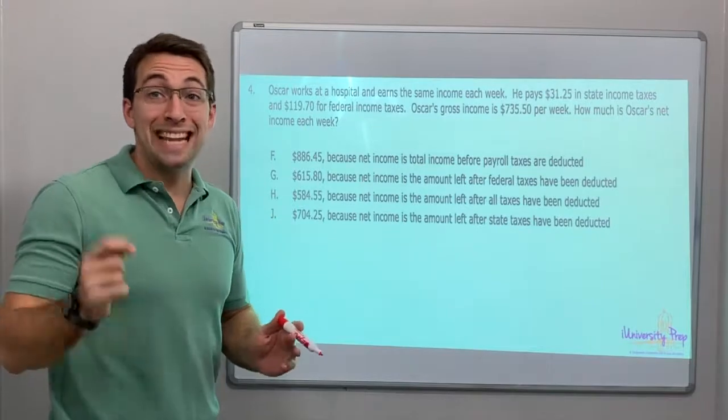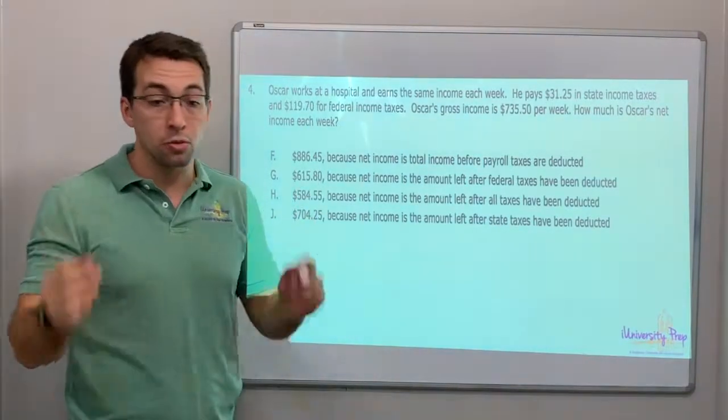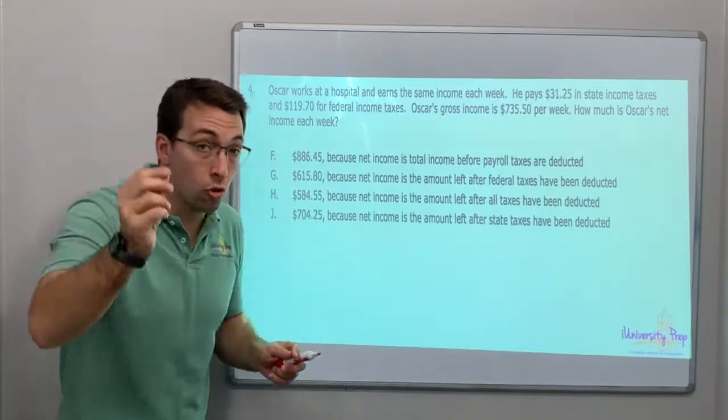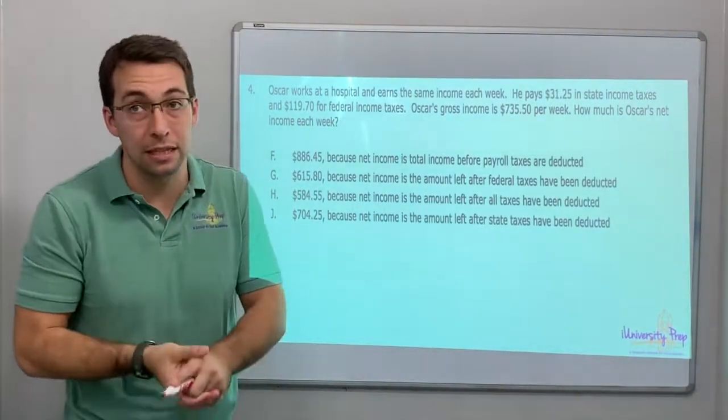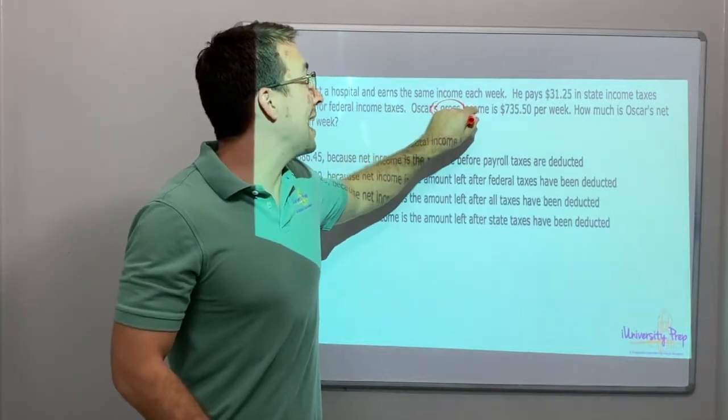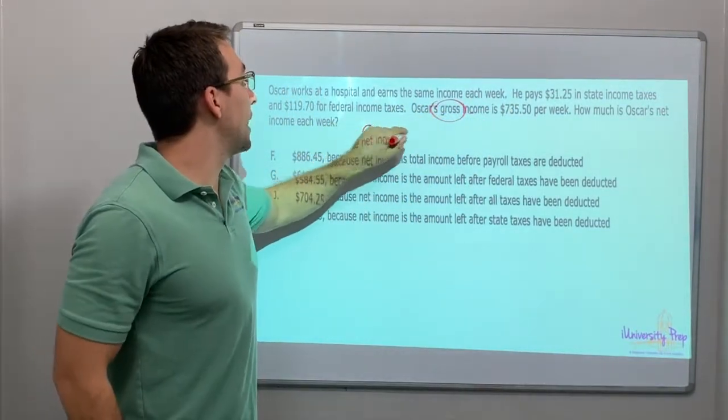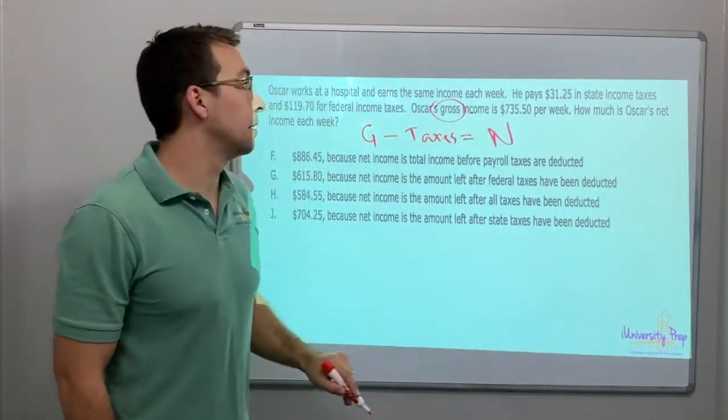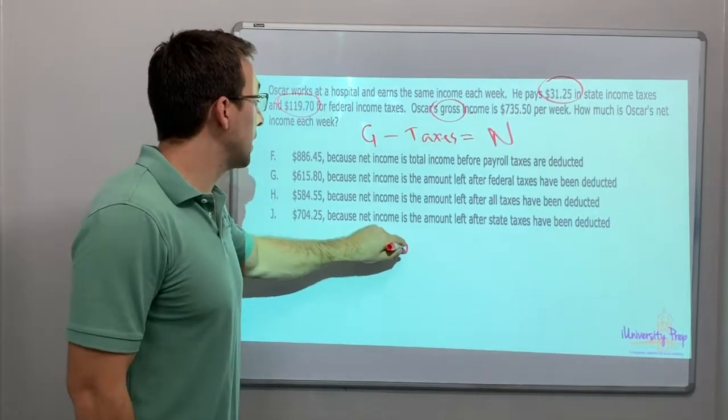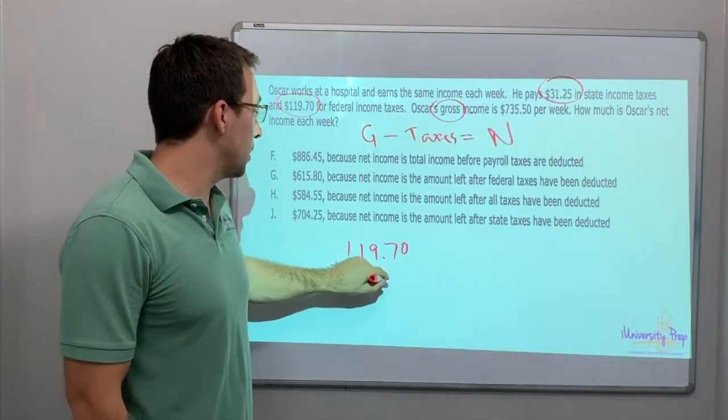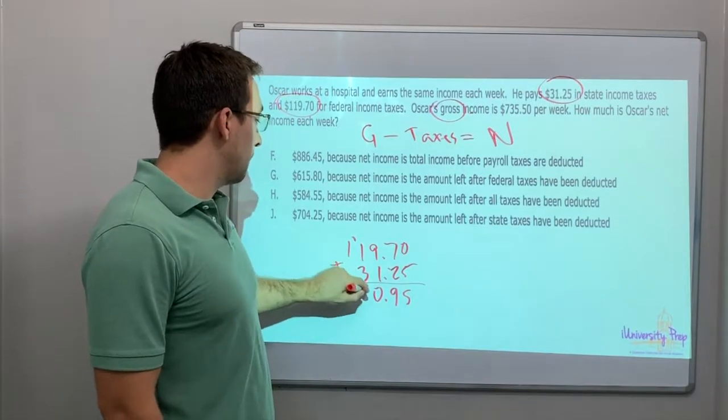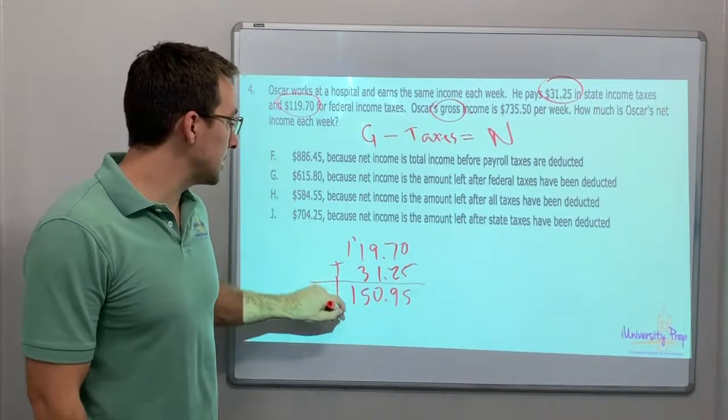Oscar works at a hospital, earns the same income each week. He pays $31.25 in state income taxes and $119.70 in federal income taxes. Oscar's gross income is $735.50 each week. What is his net income? So net equals the gross minus taxes. Gross minus taxes equals net. And notice he has two types of taxes. So let's add them together. $119.70 plus $31.25. Add them together. 5, 9, 10, 5, 5, 1. So this is his total taxes.